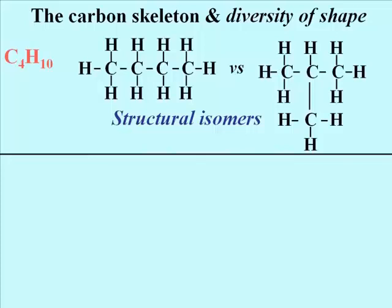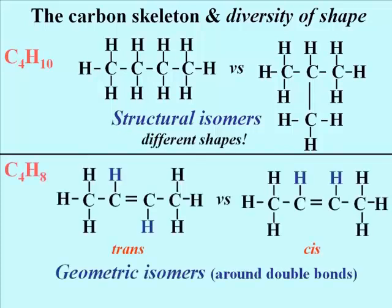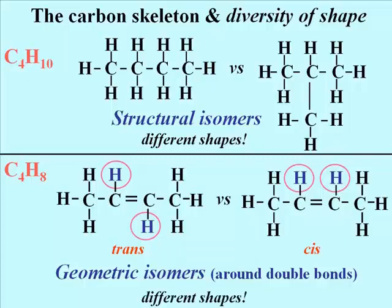At the top of the slide are two structural isomers of C4H10. Geometric isomers occur when the same atoms or chemical groups can be on the same side or on opposite sides of a double bond — we say cis or trans respectively — as shown in this case for C4H8 in the lower part of the slide. The hydrogens are on either opposite or the same sides, as shown on the left and right in this illustration. Again, different shapes.